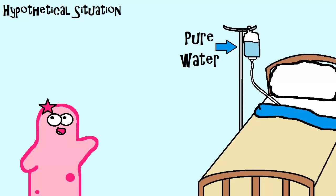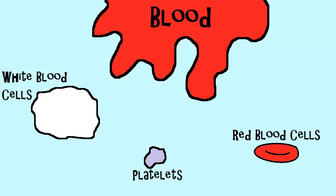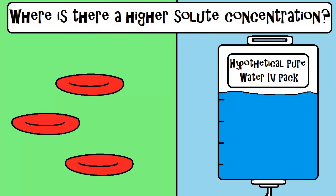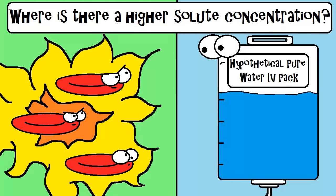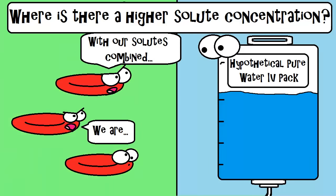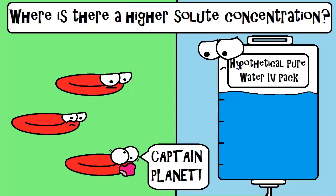Really useful for running medication through. Blood actually consists of many different types of cells. Red blood cells are a great example. So what do you think has a greater solute concentration? The hypothetical pure water in the IV tube or in the red blood cells? Remember, cells are not empty vessels. They do contain solutes.